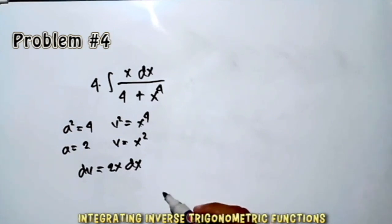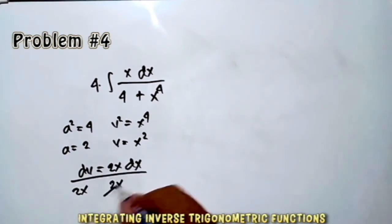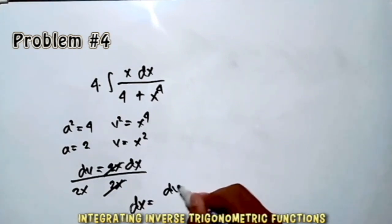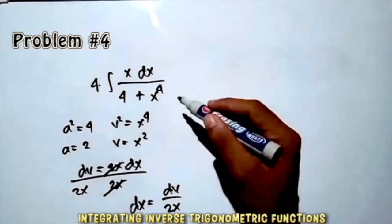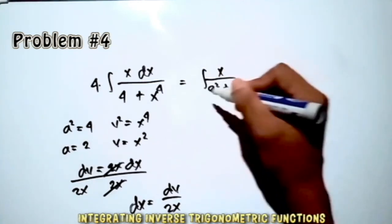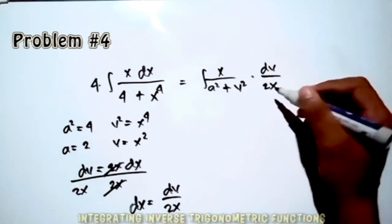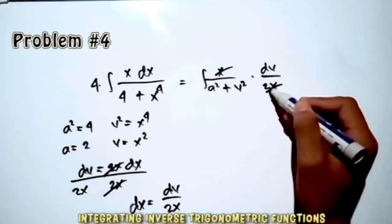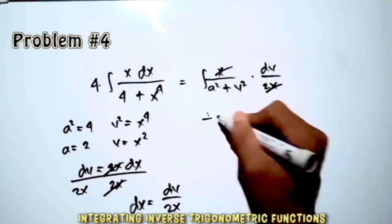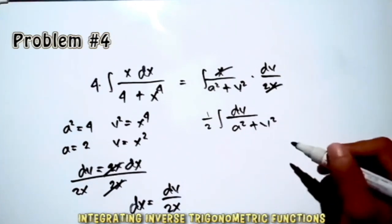To get dx, divide both sides by 2x, so dx = dv/(2x). Substituting into the problem, we get the integral of x over 4 (a²) plus x⁴ (v²), times dv/(2x). The x terms cancel. Since 1/2 is a constant, we pull it in front: (1/2) times the integral of dv over (a² + v²), which follows the arctan formula.